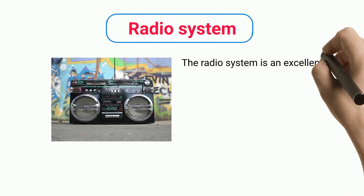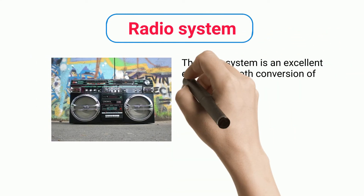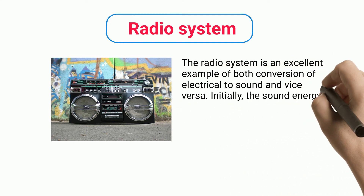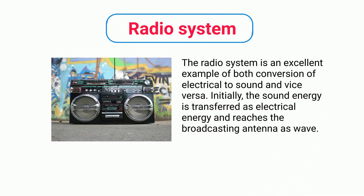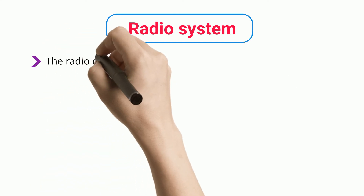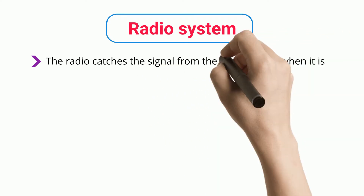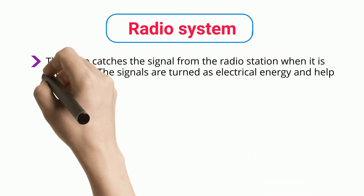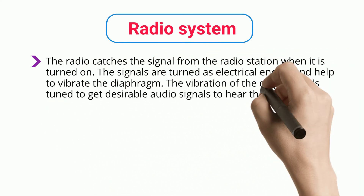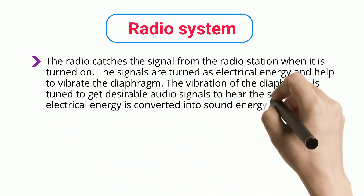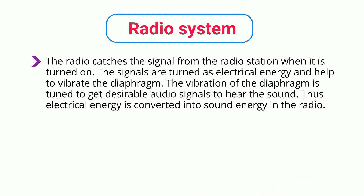The radio system is an excellent example of both conversion of electrical to sound and vice versa. Initially, sound energy is transferred as electrical energy and reaches the broadcasting antenna as waves. The radio catches the signal from the radio station when turned on; the signals are converted into electrical energy, which vibrates the diaphragm. The vibration is tuned to get desirable audio signals, thus converting electrical energy into sound.